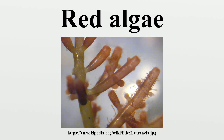Reproduction. The reproductive cycle of red algae may be triggered by factors such as day length. Fertilization. Red algae lack motile sperm; hence they rely on water currents to transport their gametes to the female organs, although their sperm are capable of gliding to a carpogonium's trichogyne.